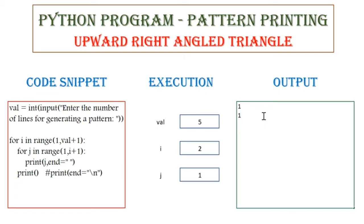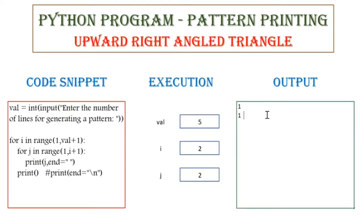Next, the control goes to the inner for loop. The value of j will be 1, and I am going to print the value of j, which is 1. Next, the for loop executes again where the range is going to be till i plus 1. The value of i is 2, so 2 plus 1 is 3. Now range will assign the value 2 to j, so the value of j will become 2 and it will be printed on the same line. Next, the value of j will be 3. Since this condition will not be met, control exits from the inner for loop and goes to the outer for loop, where it will print a new line.